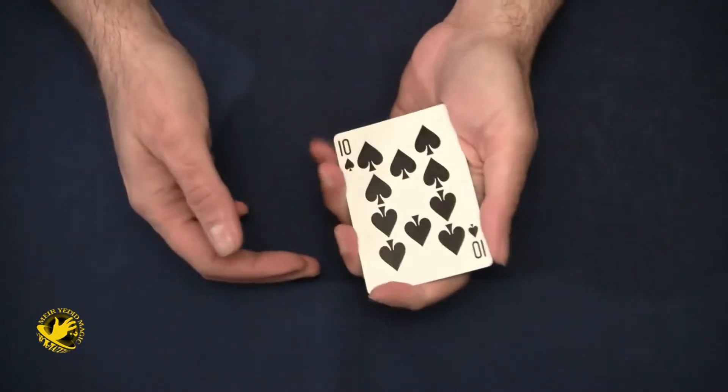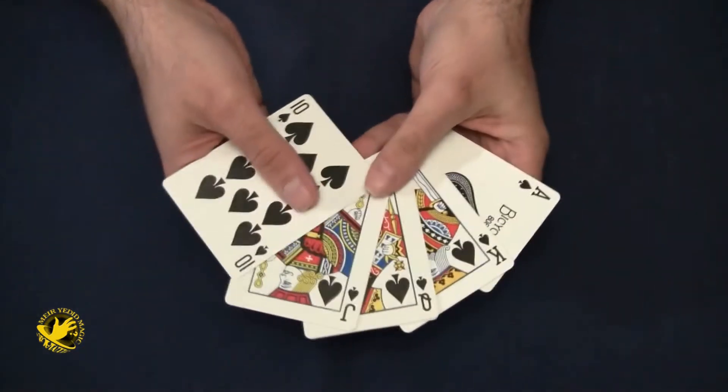If I wave my hand over the five cards, they turn into the best possible hand, a royal flush in spades.